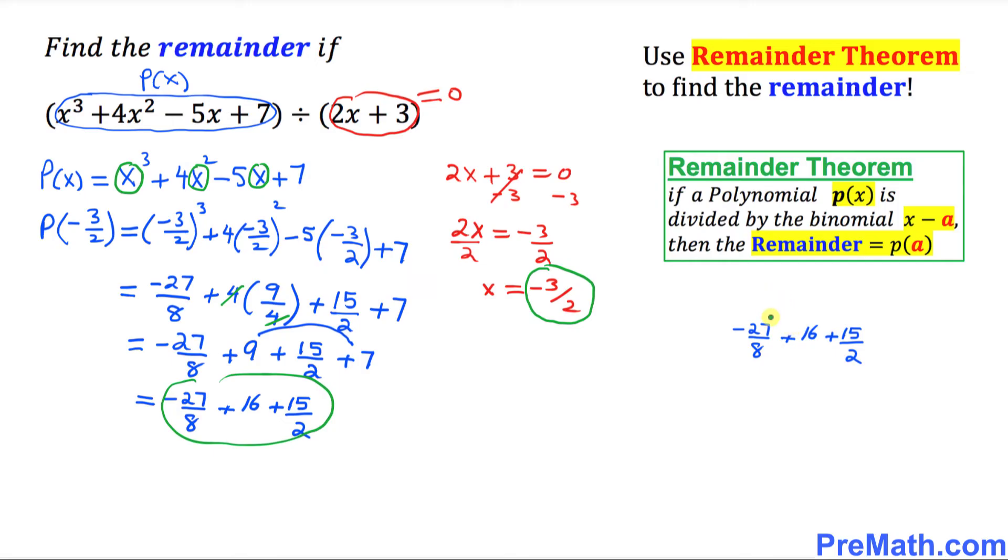This whole part I wrote down over here and we're going to simplify it. As you can see, 16 could be written as 16 over 1 to make it a fraction and we can see that our least common denominator or LCM is going to be 8.